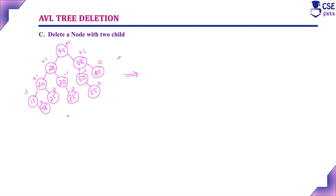Now I am going to delete a node with two children — that is, delete node 68. When deleting a node with two children, there are two cases for replacement. One is the in-order predecessor, which is the largest value in the left subtree. In the left subtree, 50 and 55 are there, so the largest element is 55, which we can replace in place of 68. That is called the in-order predecessor.